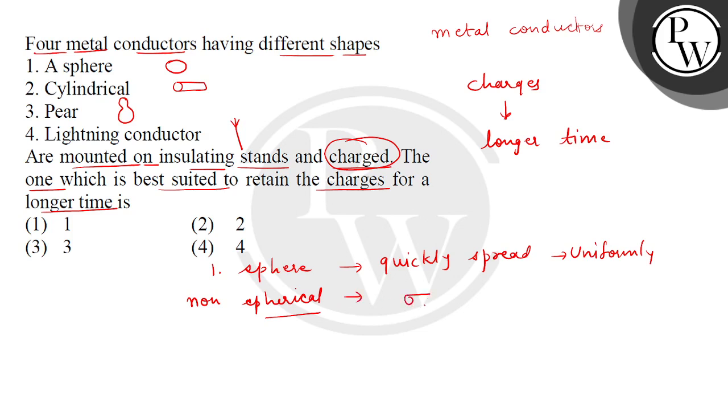charge distribution per unit area, that is the surface density sigma, that will be different at different radii of curvature. That means if it's a sharp point